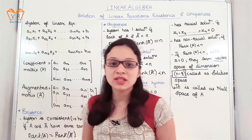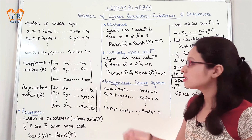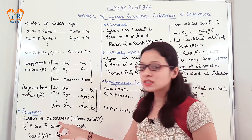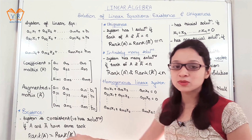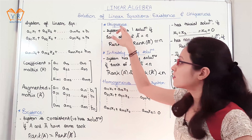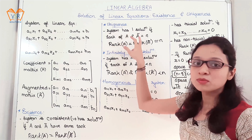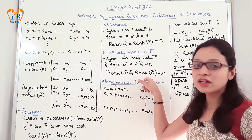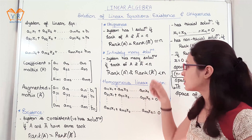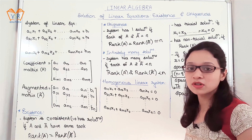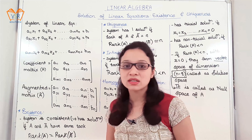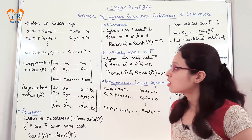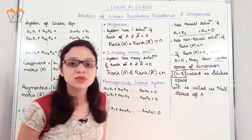So, this is all about linear equations — existence, uniqueness, and infinitely many solutions. If the system is consistent it has a solution, that is both ranks are equal. If the system has one solution, both the ranks will be equal to the number of unknowns. It will have many solutions if the rank is less than the number of unknowns, and the system is inconsistent if it does not have any solution. Hope the concept is clear.